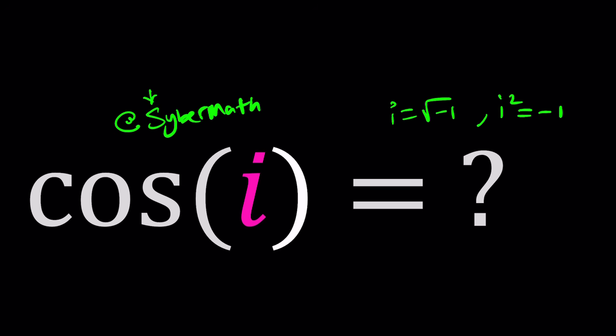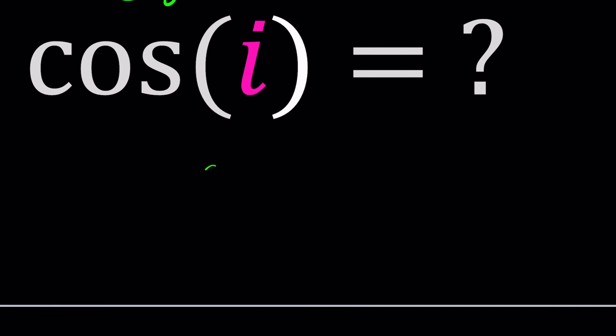I mean, if they asked us something like maybe cosine of 1 plus i, we could expand it using the sum formula. But again, we would be stuck, because this time we would have to find cosine of i and sine of i. So this approach doesn't really help.